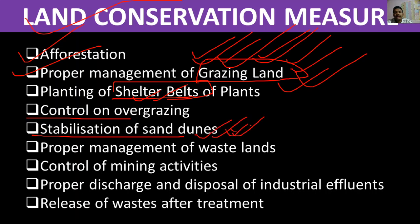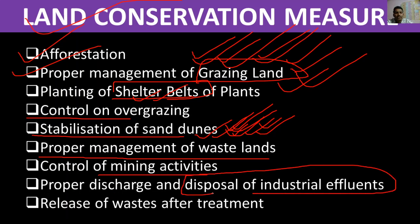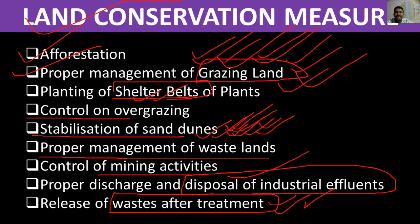Stabilization of sand dunes is especially important in desert areas like western Rajasthan and some parts of Haryana. Other measures include proper management of wasteland, control of mining activities, and proper disposal of industrial effluents — waste must be treated before it is released.